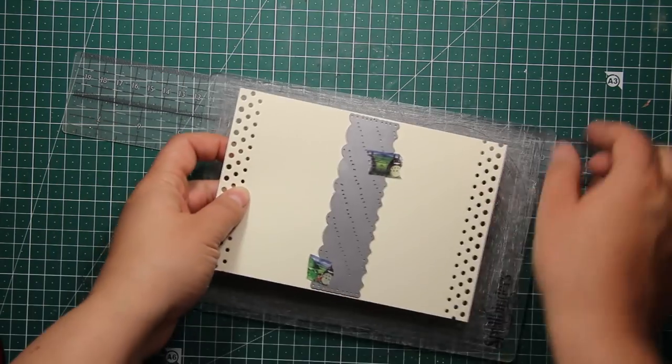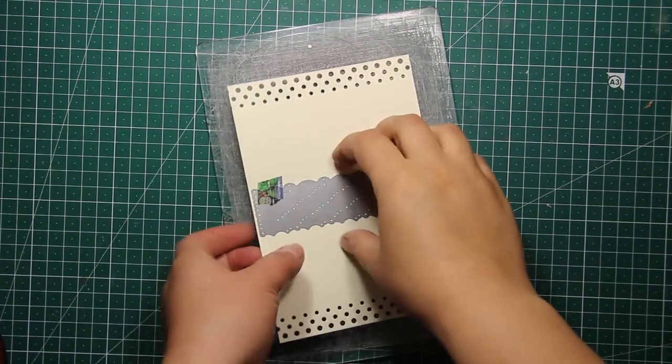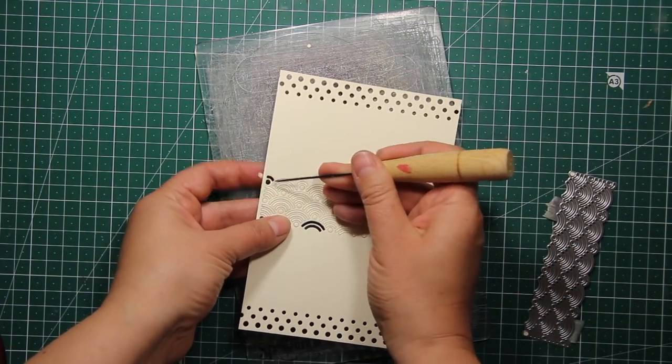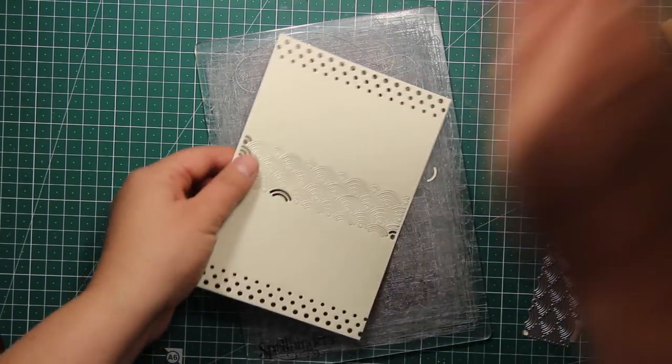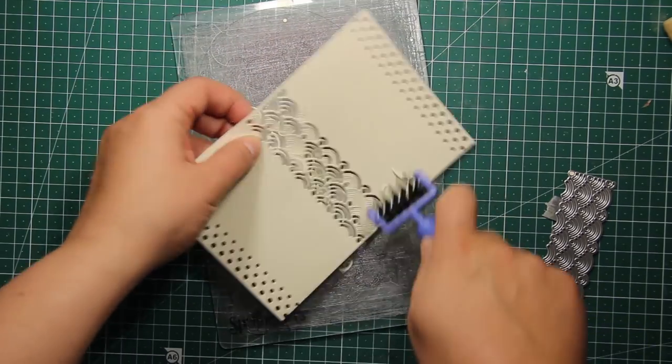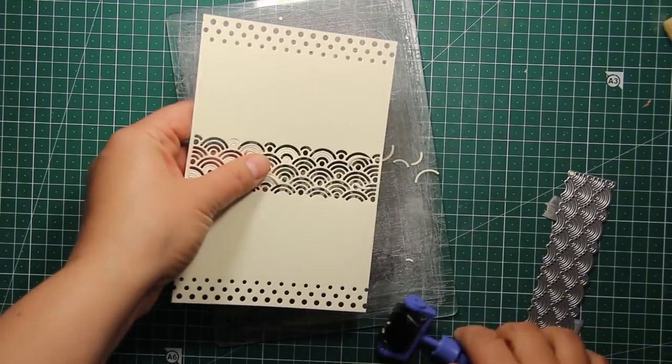This die also cuts out a negative pattern. It's called Waverly border. Then I'm going to use my roller brush. That one is by Spellbinders to clear out all those numerous tiny pieces.